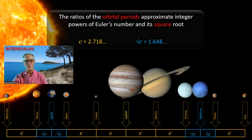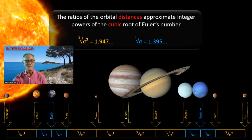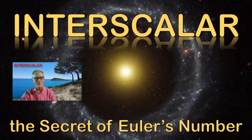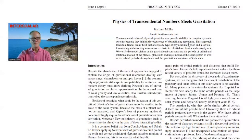The ratios of the orbital periods approximate integer powers of Euler's number and its square root. Furthermore, we discover the scale symmetry around Jupiter's orbital period. While the orbital periods follow Euler's number and its square root, the orbital distances follow the cubic root of Euler's number. Euler's number and its roots stabilize not only the solar system but also exoplanetary systems like TRAPPIST-1.